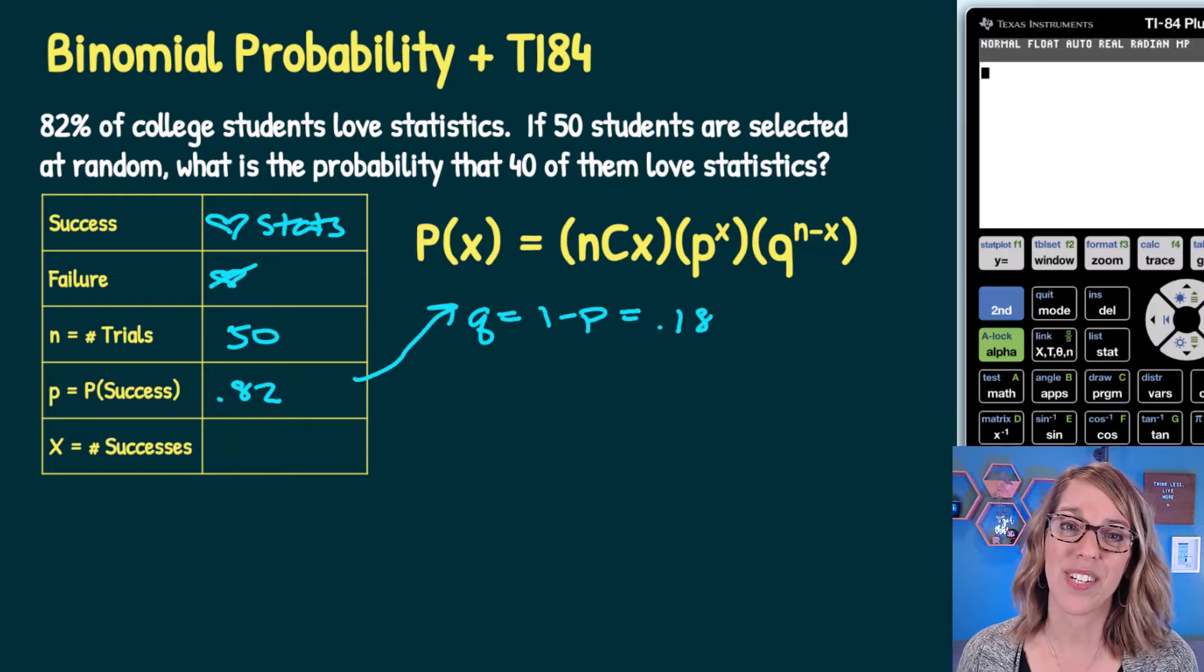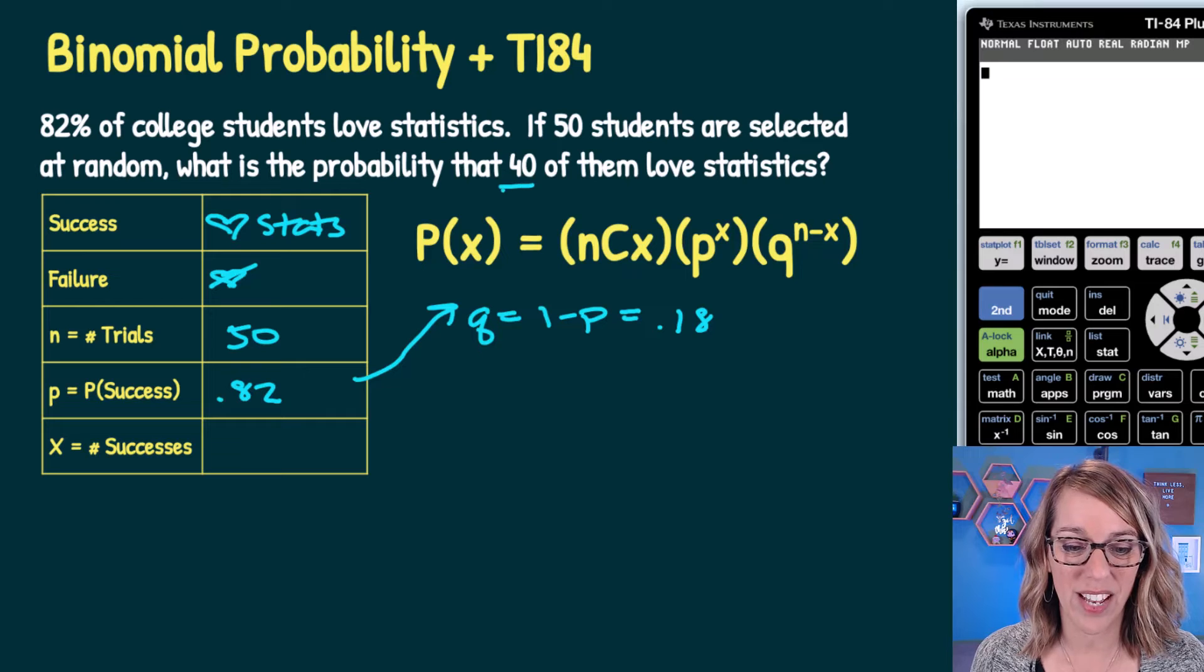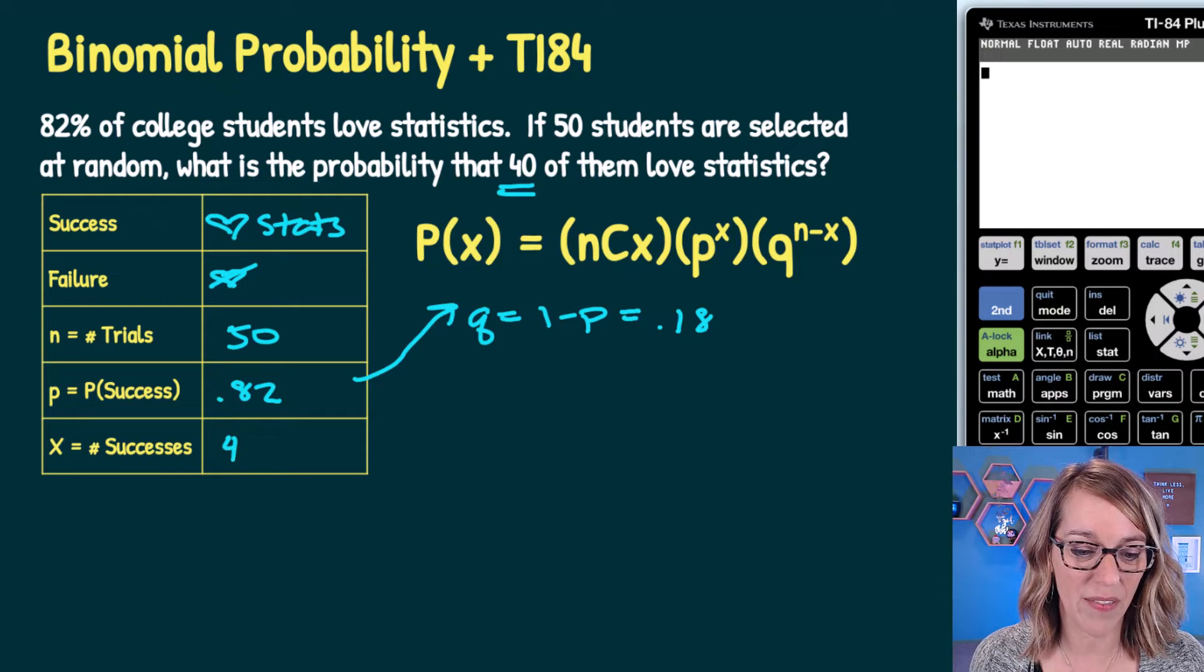I also need for the calculator the number of successes we're looking for, and X, the number of successes, is 40 out of that 50.